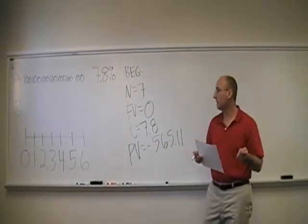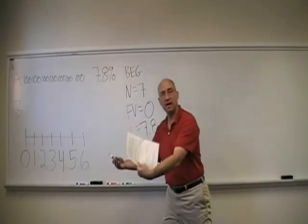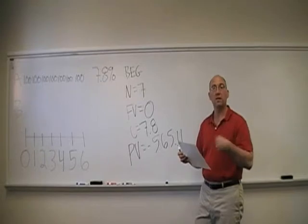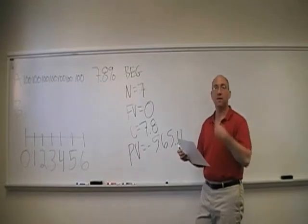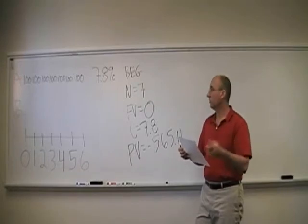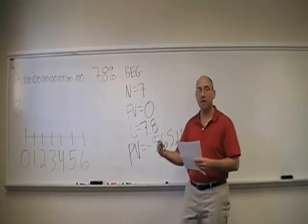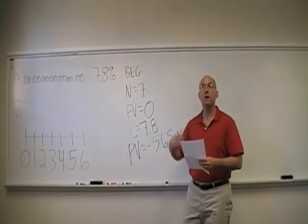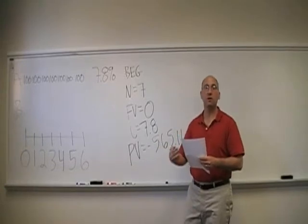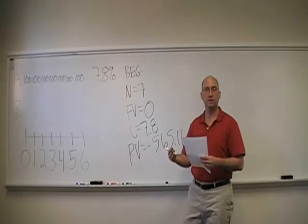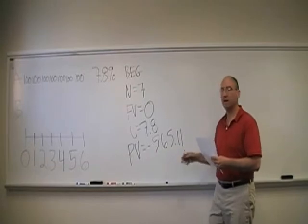So what that says is if I invested 565.11, I could buy investment A, which would give me $100 today, and then 100 in a year, 100 in two years, 100 in three, four, five, and six. Alternatively, $100 plus 100 divided by 1.078, plus 100 over 1.078 squared, plus 100 over 1.078 to the third, plus 100 over 1.078 to the fourth, plus 100 over 1.078 to the fifth, plus 100 over 1.078 to the sixth, is equal to 565.11.